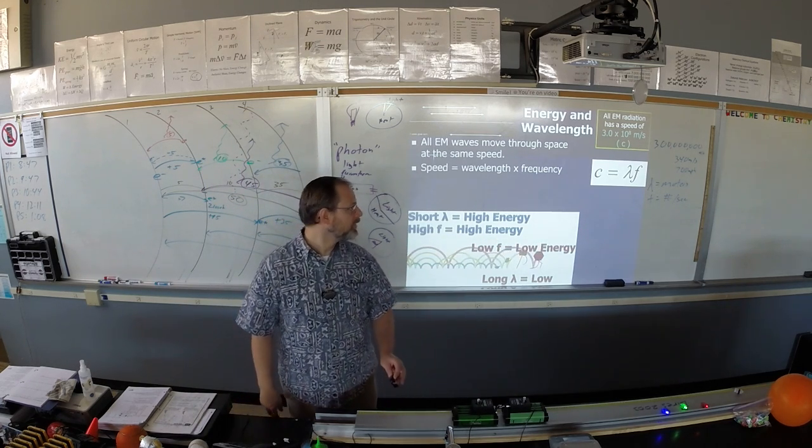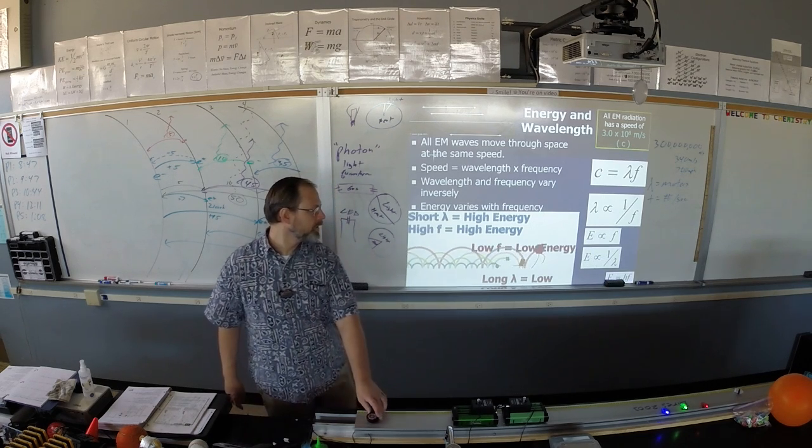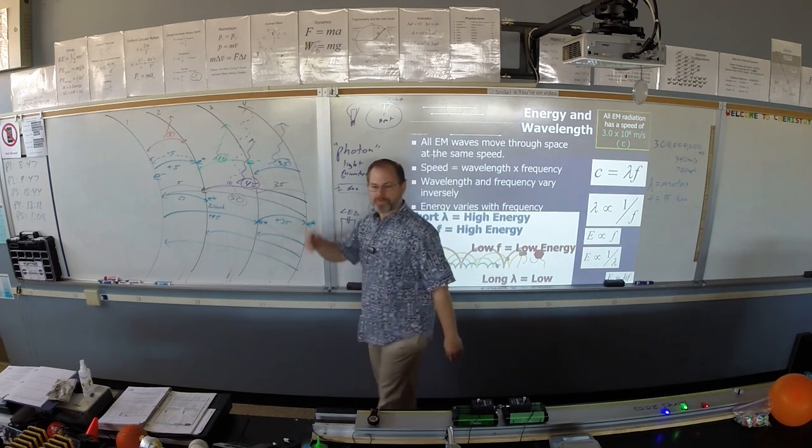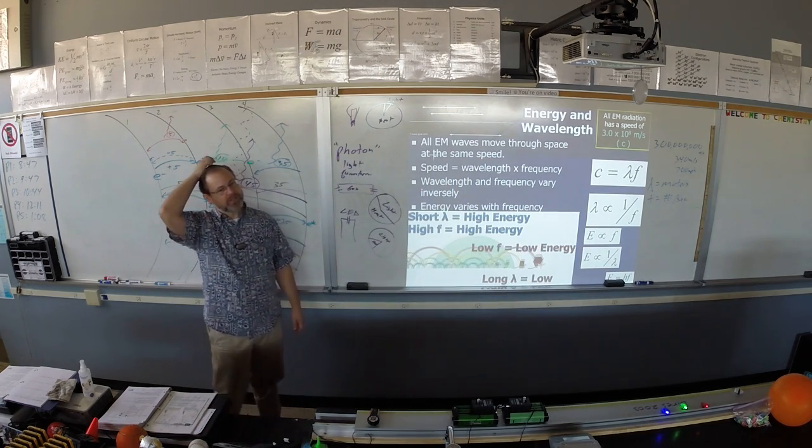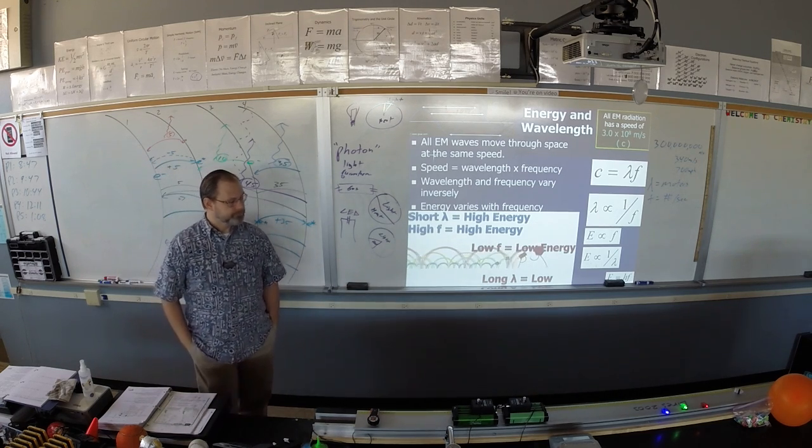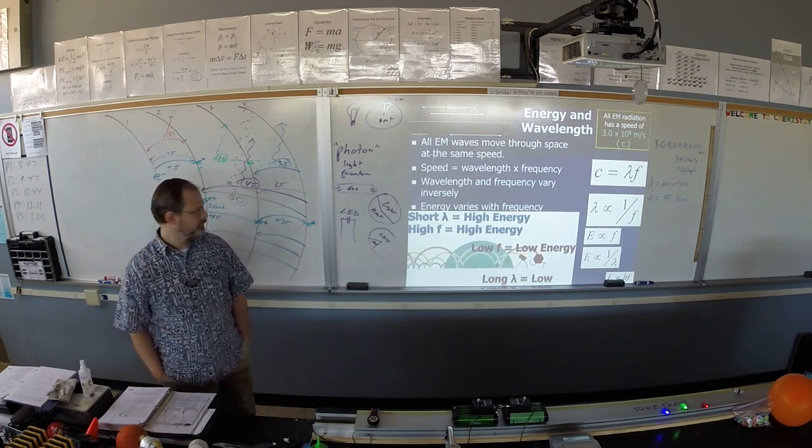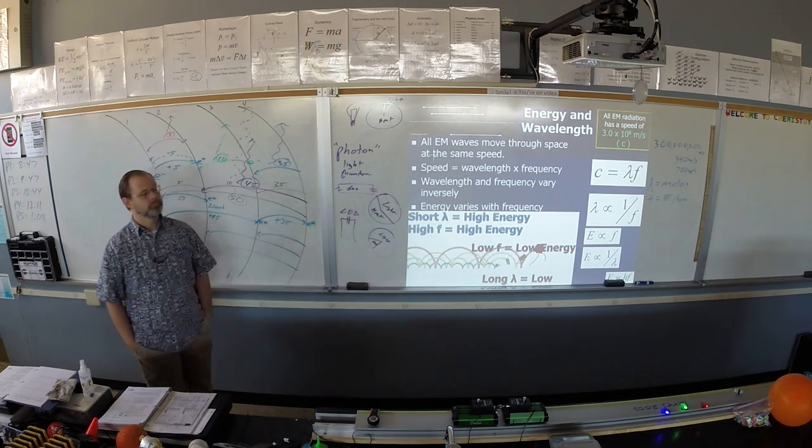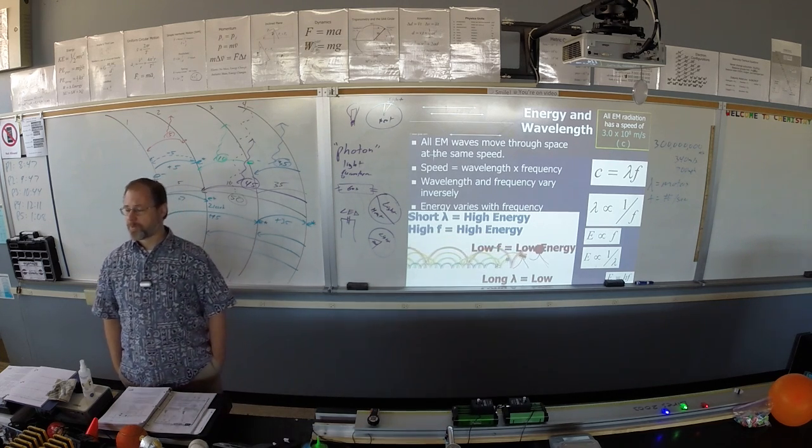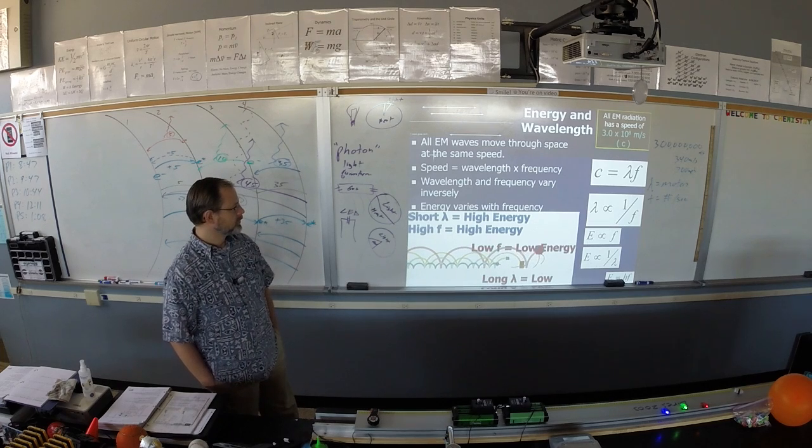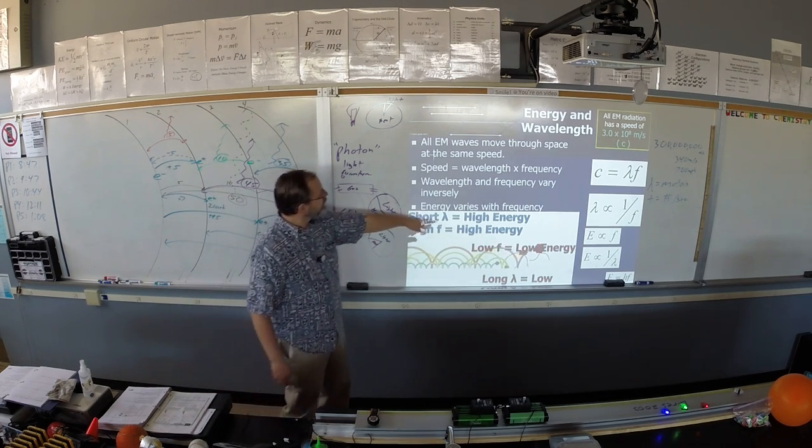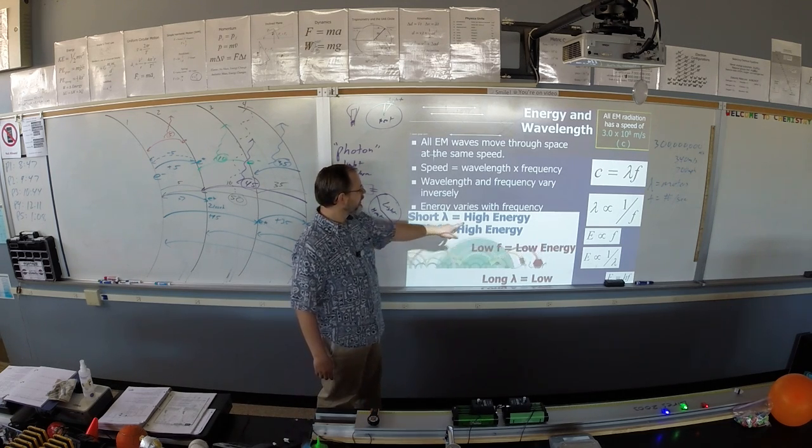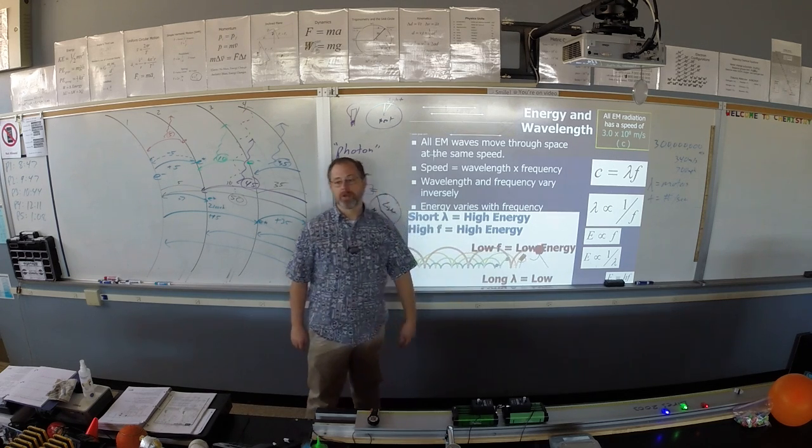And energy is tied to frequency. Energy, this is the varies with symbol. Varies with, varies with, varies with. Energy varies with frequency. The higher the frequency, the higher energy each photon is carrying. So, short wavelength, high energy, because they have a high frequency. Short wavelength means high frequency. That means high energy. Low frequency means long wavelength. That means low energy.